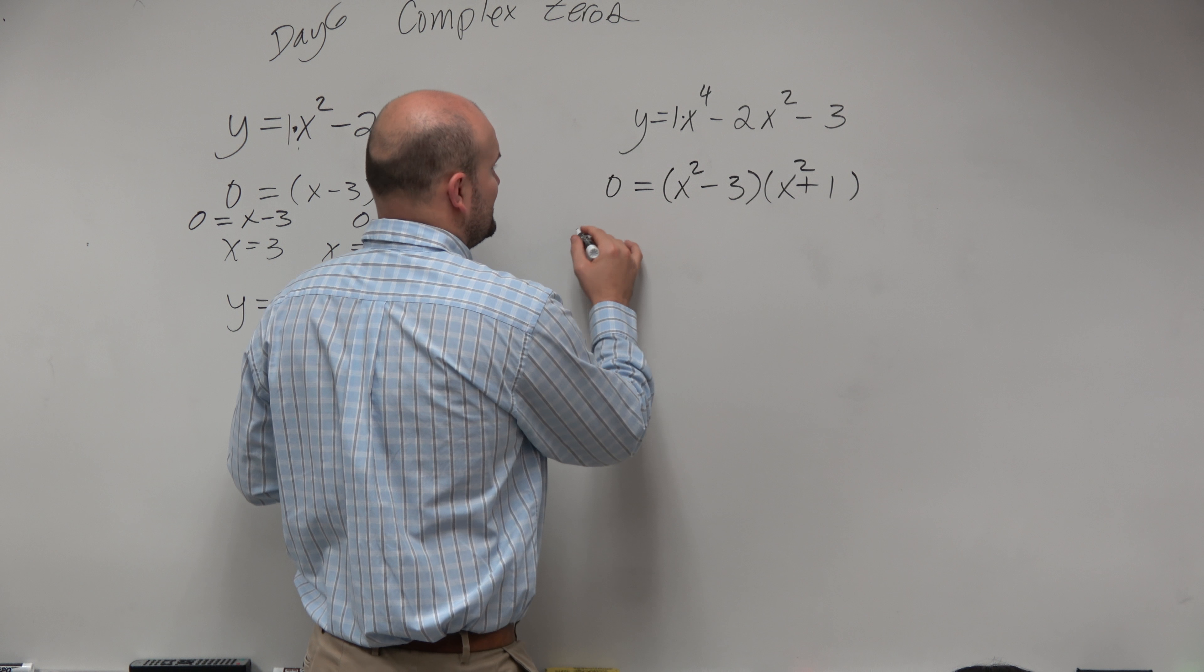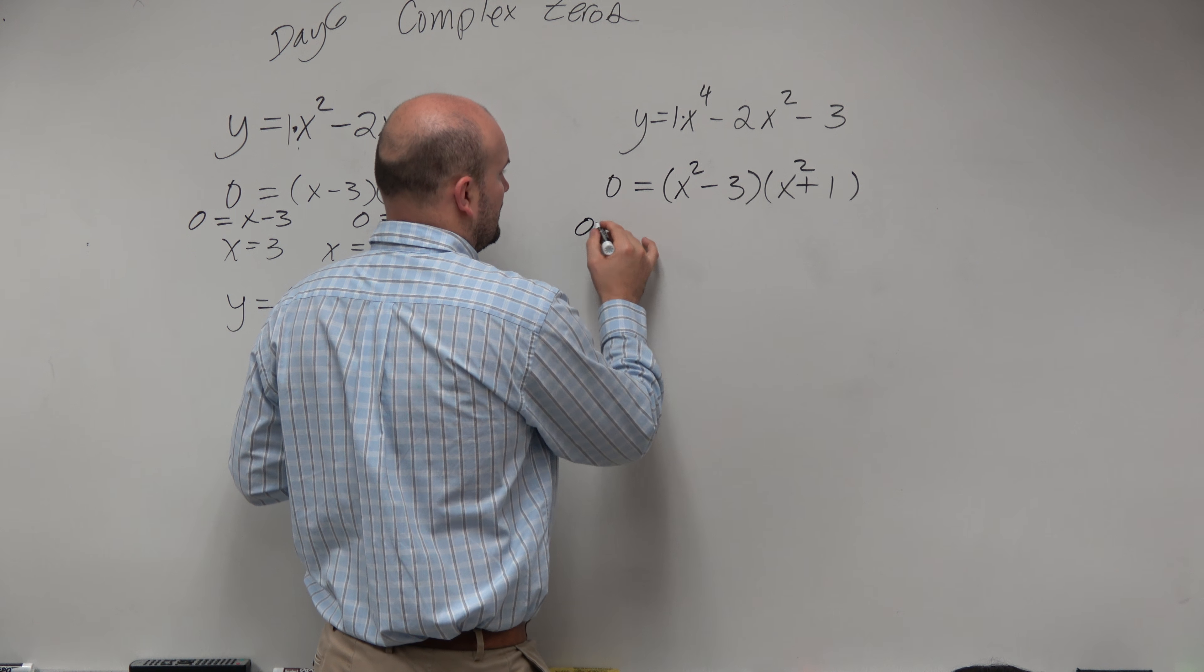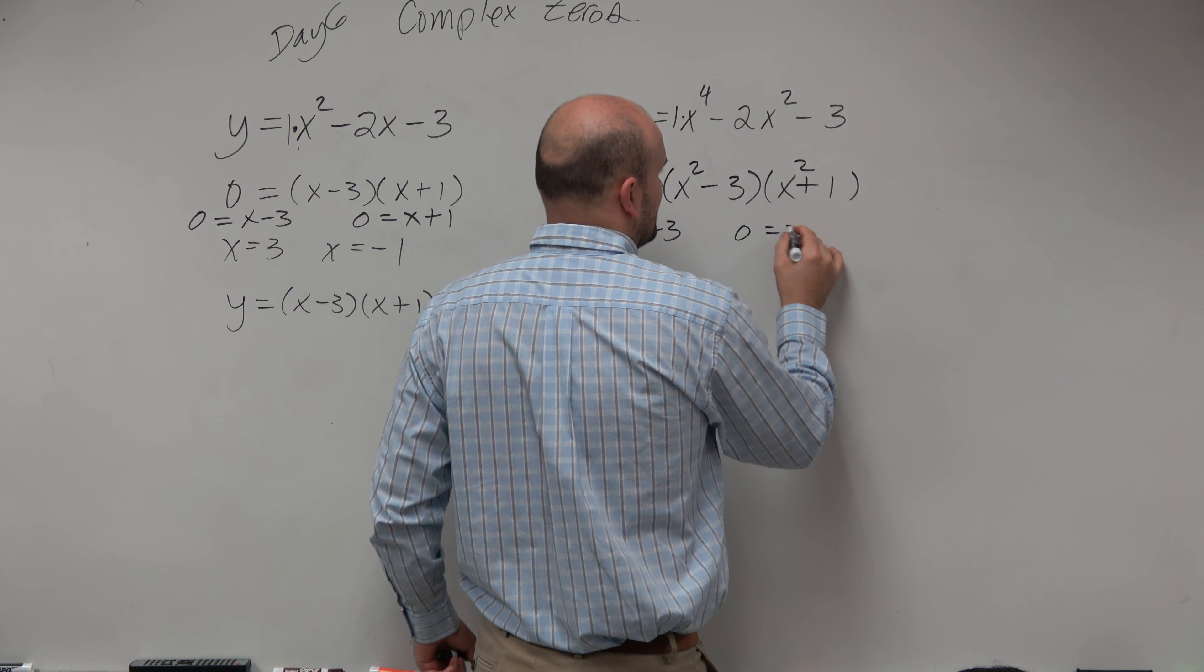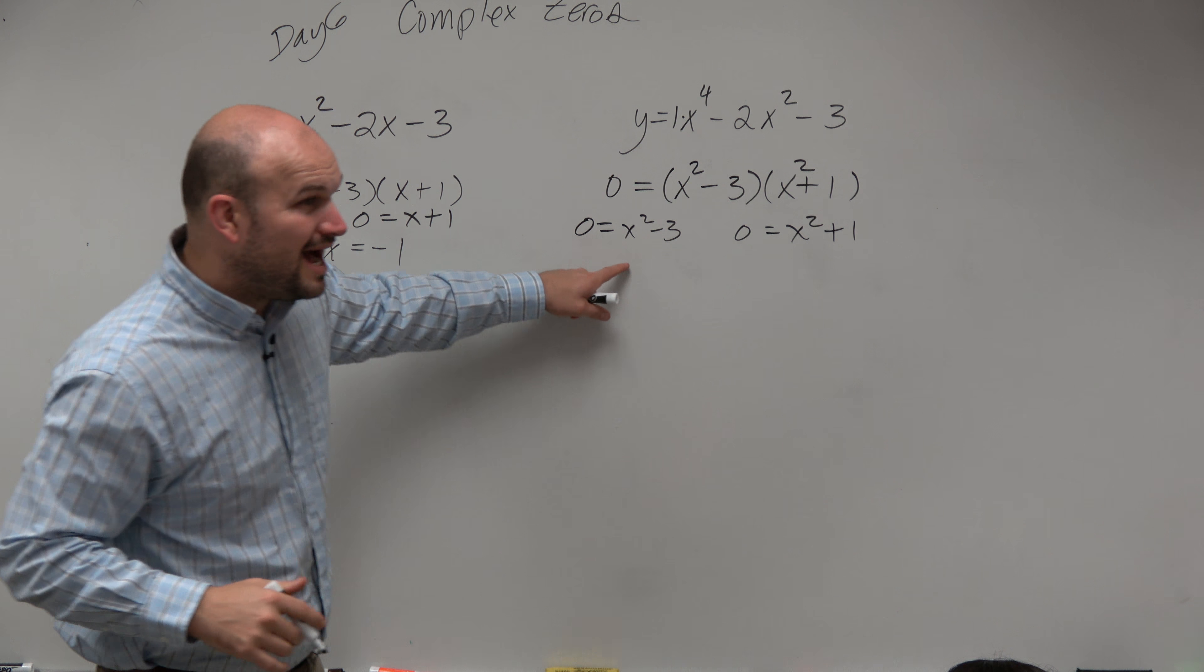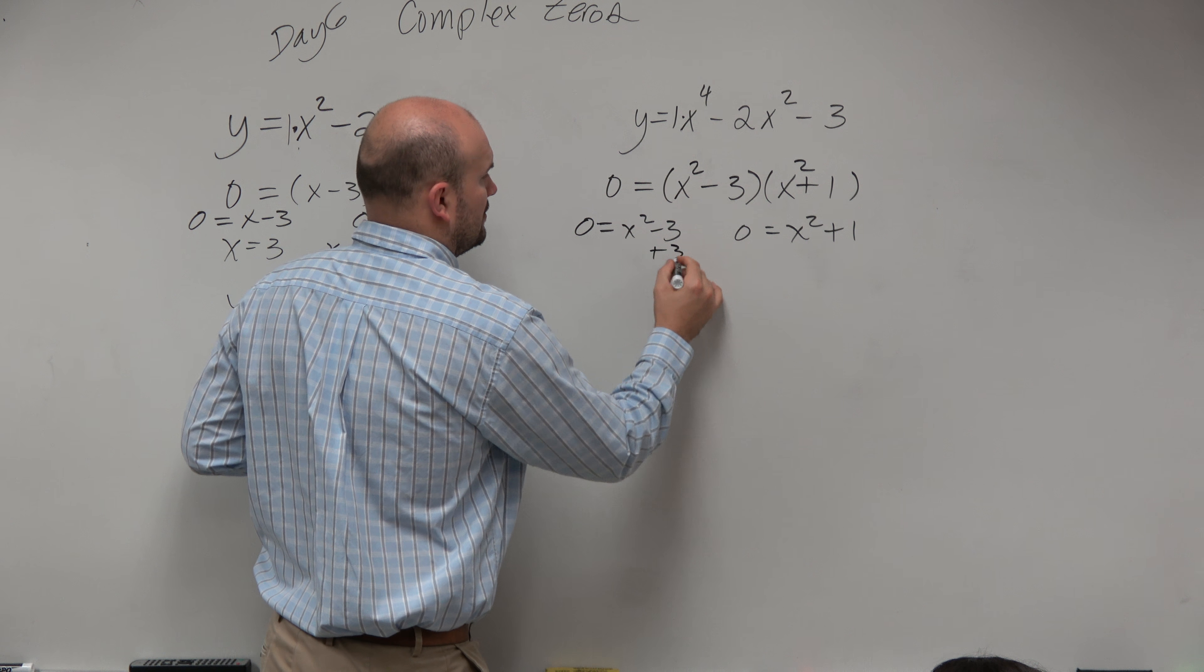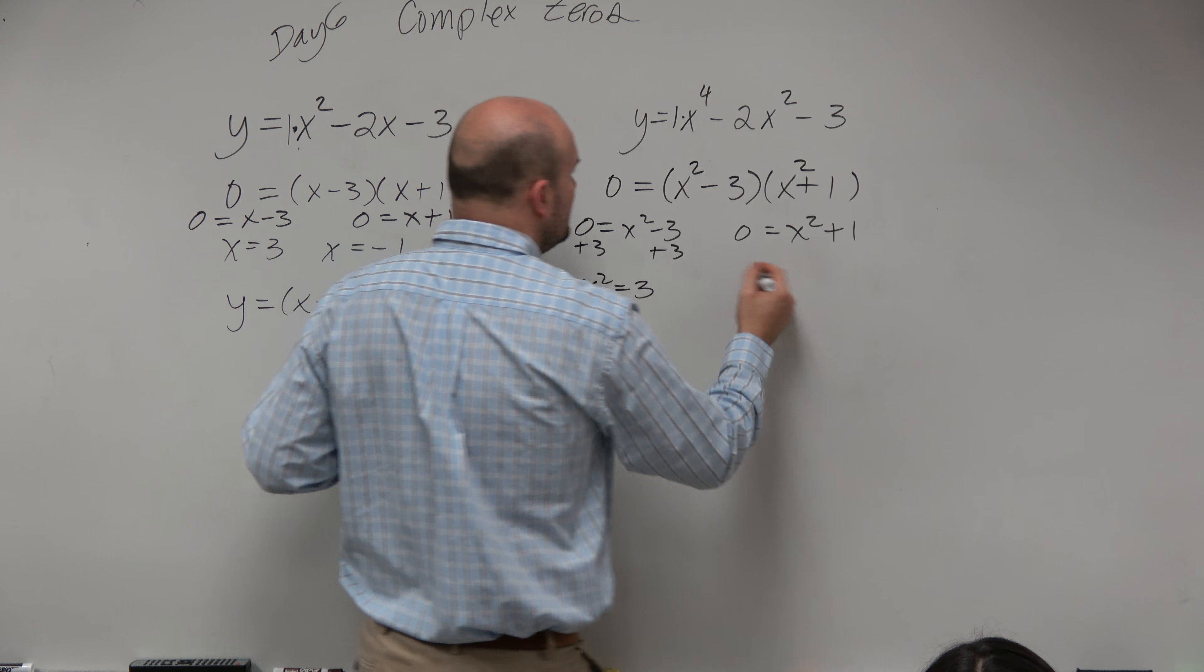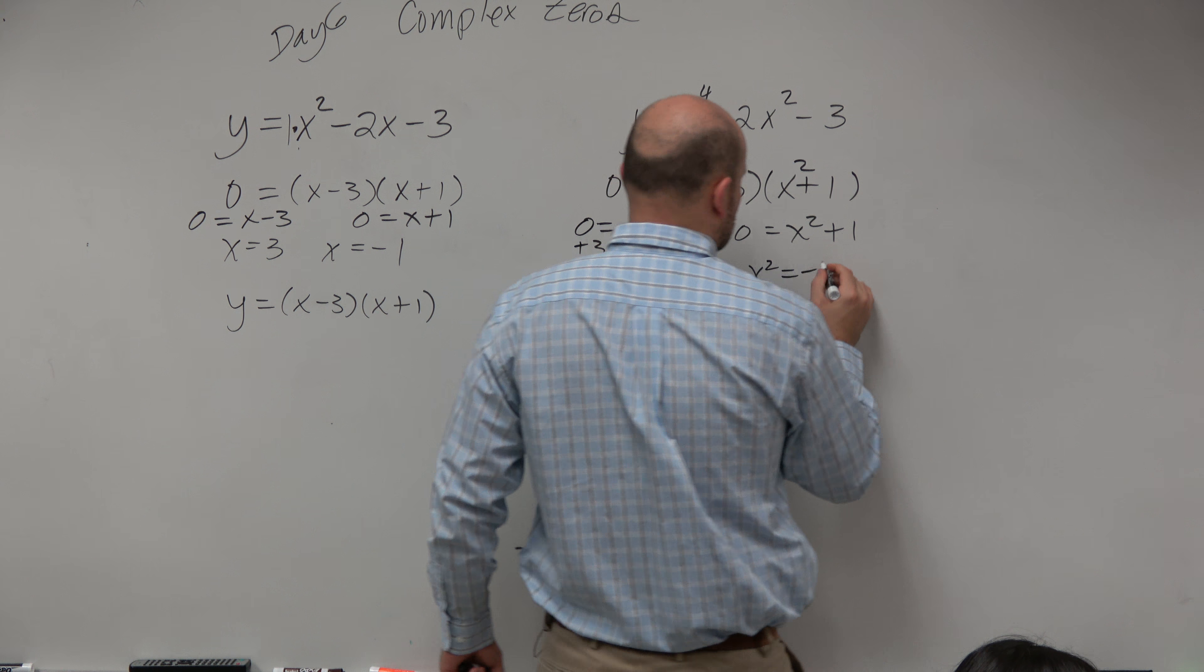Because here, if I use the zero product property again, 0 equals x squared minus 3 and 0 equals x squared plus 1. Well, now, when I solve, I'm actually going to rewrite these: x squared equals 3, x squared equals negative 1.